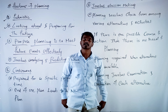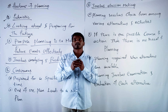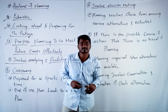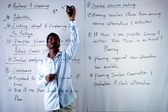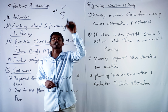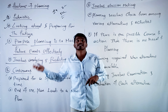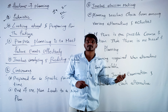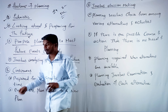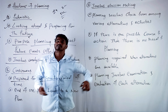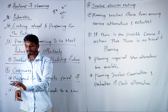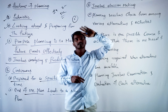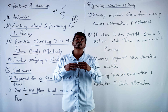The fifth feature of planning is that it is continuous. Planning is continuous because you are not going to plan for the entire business life. You will plan for one year, two years, or maximum five years. After reaching that point or achieving that goal, the next plan will lead the business forward. We should make another plan to keep running the business. Plans are prepared for a specific period of time, and the end of one plan leads to a new plan.